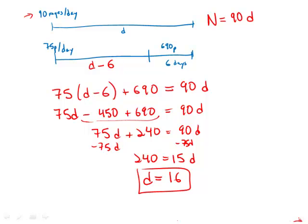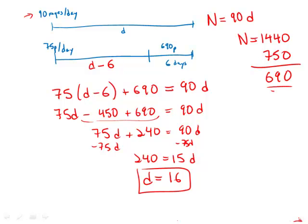We can check this to make sure. If she was going to read 90 pages a day for 16 days, the total number of pages would be 90 times 16, which is 1440. And if she only read 75 pages a day for 10 days — that is 16 minus 6 — then she read 750 pages. Subtracting, she had 690 pages left. So that checks out.